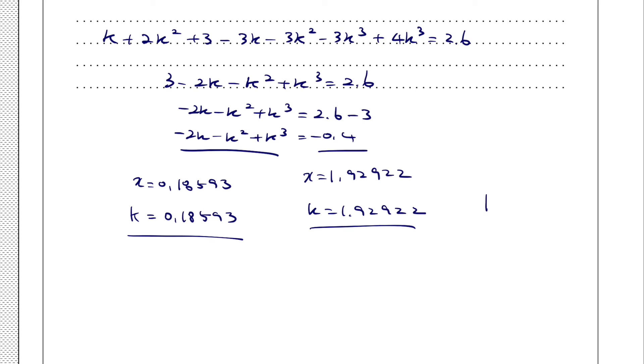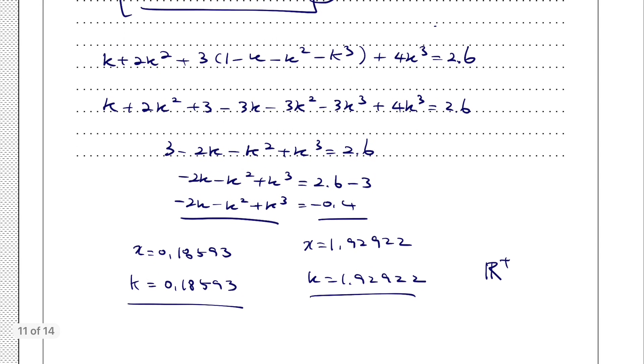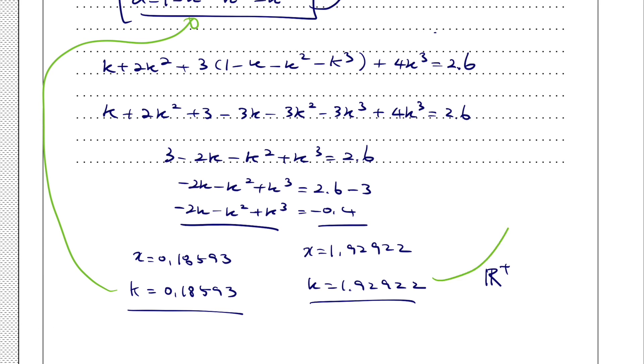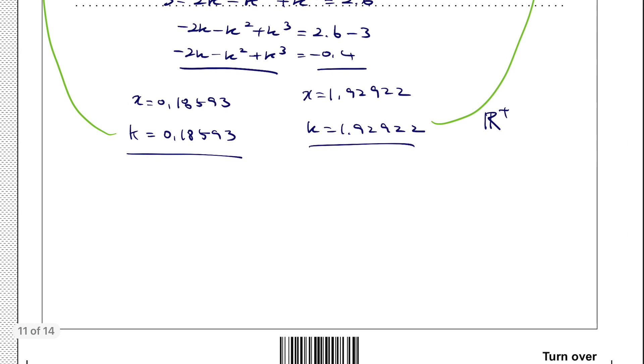But we have to make sure that the a value is also a positive real number. So we're going to substitute these values into the equation a equals 1 minus k minus k squared minus k cubed. For the first one, you get a value equals 0.77307. For the second one, you get a value equals -11.828. You can see that this set of equations does not fulfill the requirement. However, the first set fulfills the requirement of being positive real numbers. So we can say that k value equals 0.186 and a value equals 0.773.